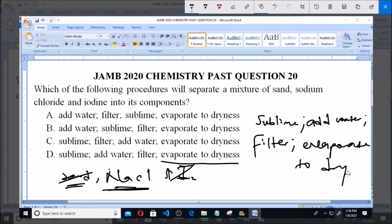So this is the step in the separation of the following components: sublime to remove iodine, add water so you can filter to remove the residue which is sand, and then evaporate the solution to dryness to give off sodium chloride. The answer to this question is option D. Thank you, and ensure you subscribe to our channel for more videos and past questions.